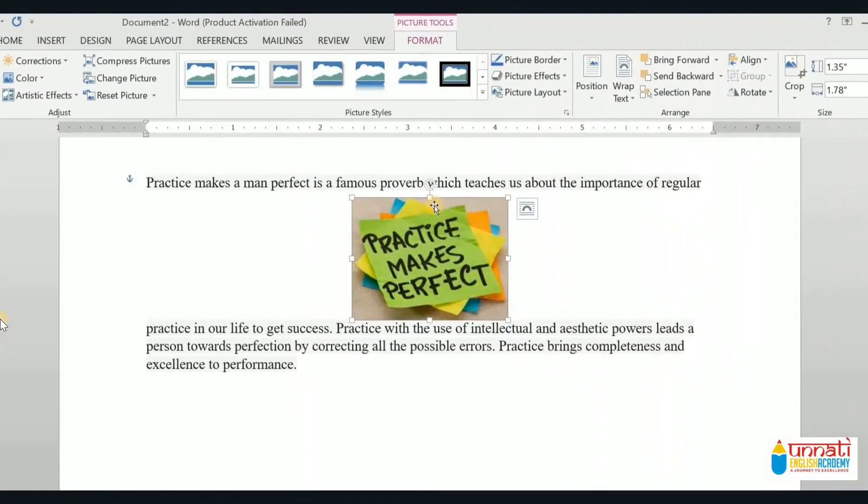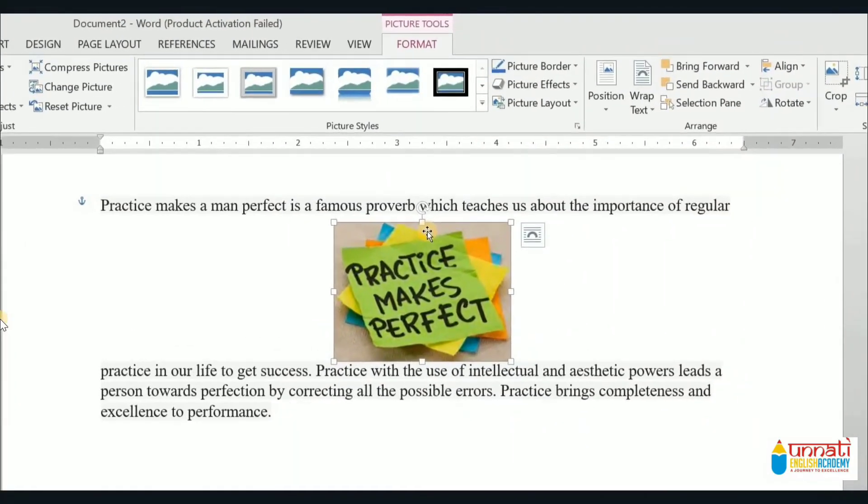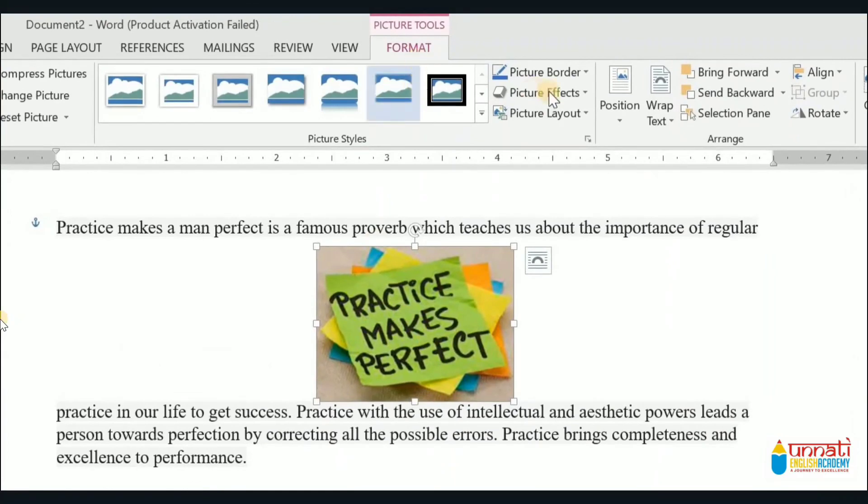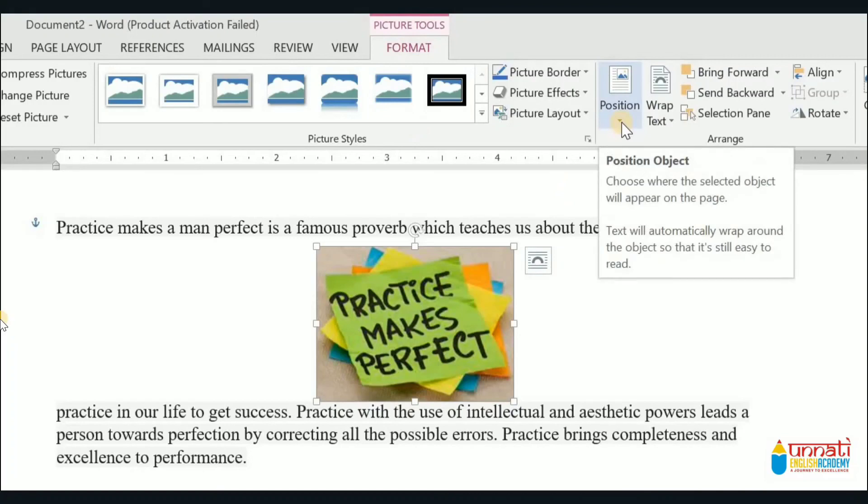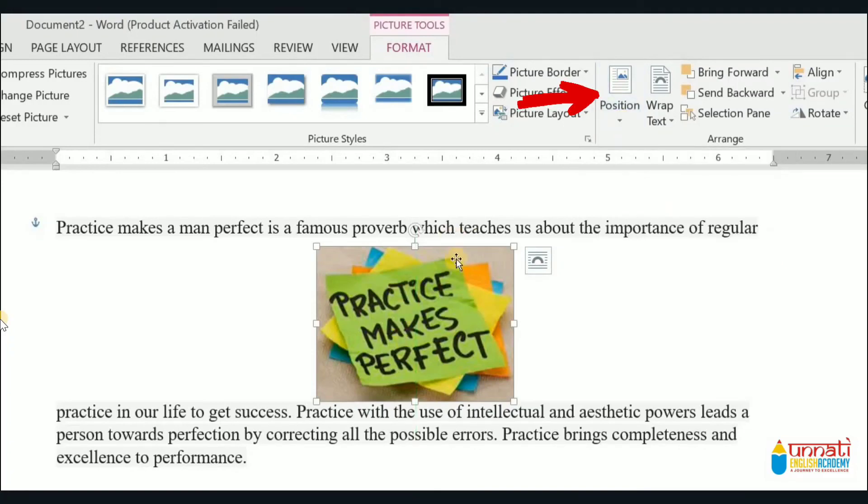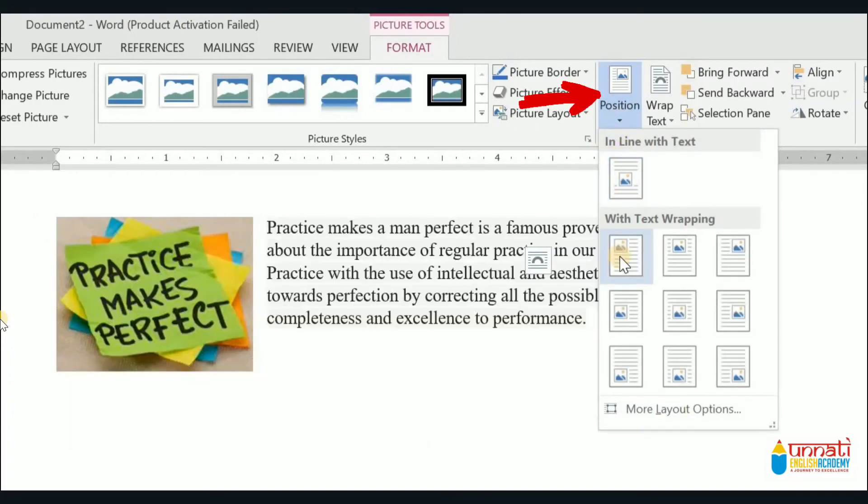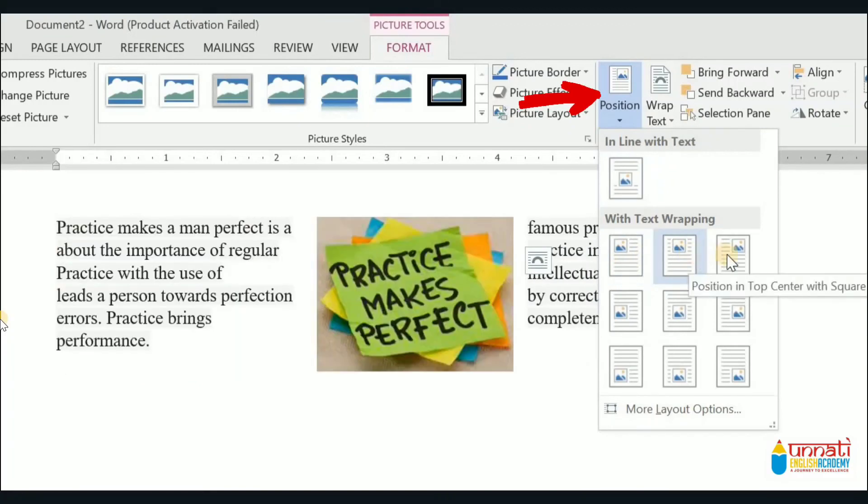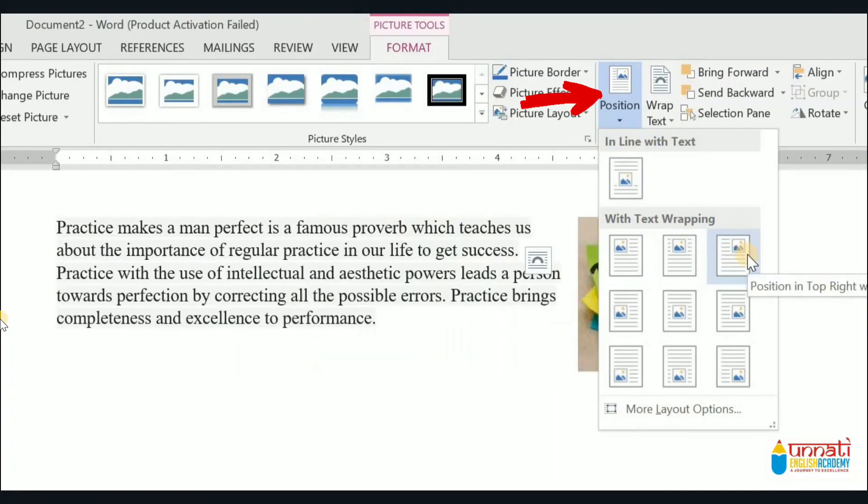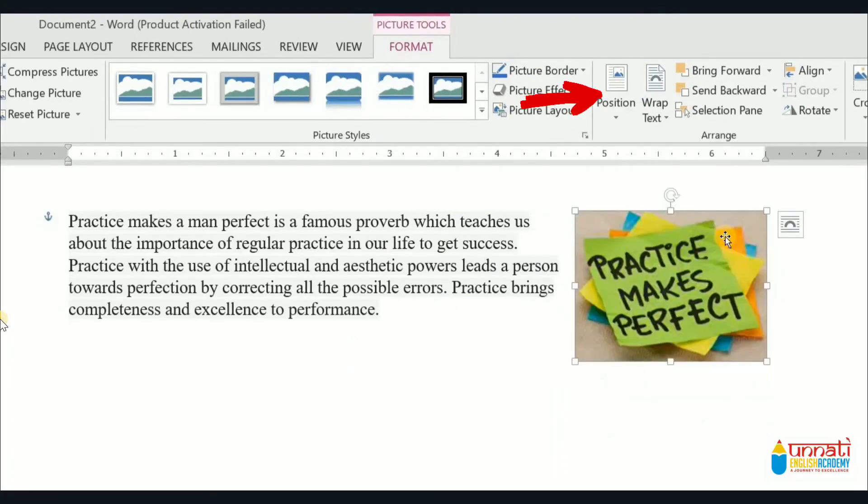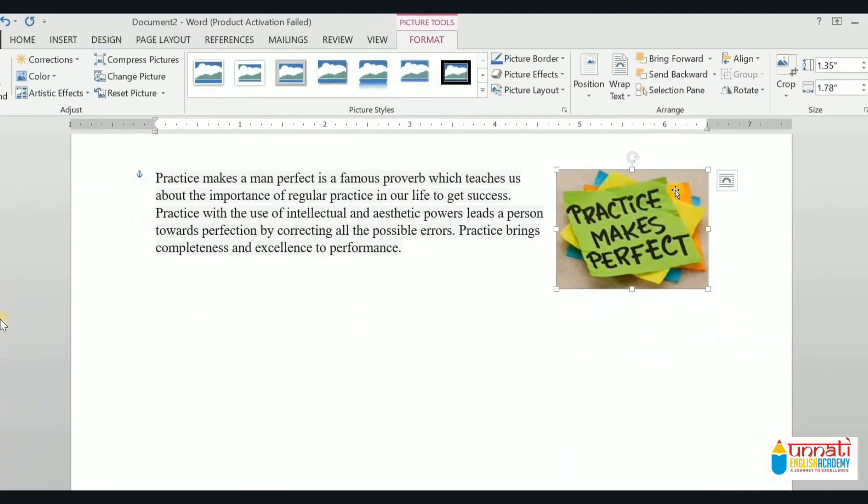Now we will see the Position command. The Position command helps you place your image or text box at a particular position on the page. To do so, first of all select the image. Now click the Format tab. In the Arrange group, click the Position command. There are many options available. Select the desired position in the gallery that appears. When you choose any option, the text flows around. You can see the live preview also.